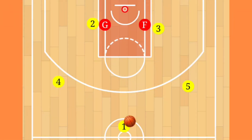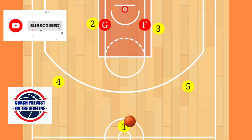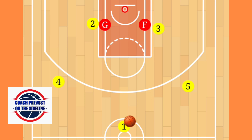Hey, what's going on everybody? Welcome back to the channel, it's your coach, Coach P. You're on the sideline. In today's video we're going to look at what we call Rockets. Rockets is a motion offense play. The strategy behind the Rockets play really is just to get a quick post up with the down screens on the wing.